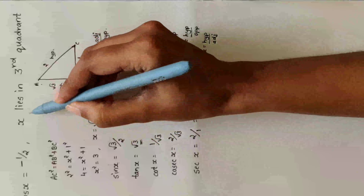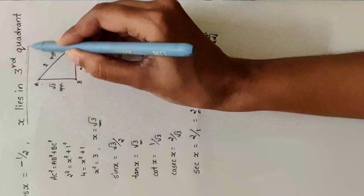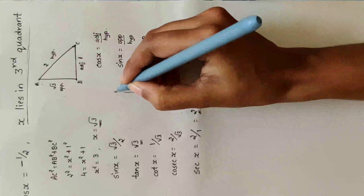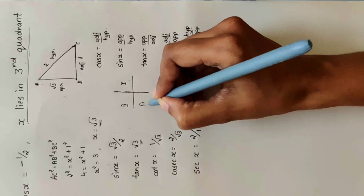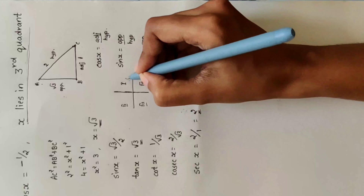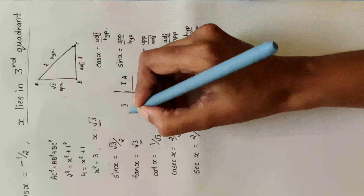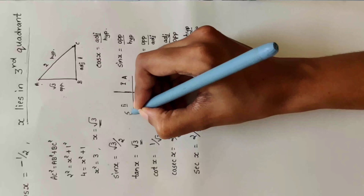Now, the question states that x lies in the third quadrant. Drawing the quadrant figure: first, second, third, and fourth quadrants. Using 'After School To College' — in the first quadrant all are positive. In the third quadrant, only tan and cot are positive; all the rest of the ratios will be negative.